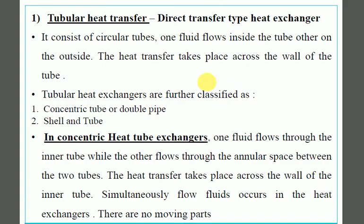Looking at the theory: it consists of a circular tube. One fluid flows inside the tube and the other is outside; heat transfer takes place across the wall of the tube. In a concentric tube heat exchanger, one fluid flows through the inner tube while the other flows in the annular space between the two tubes. Fluid flow occurs simultaneously and the parts are not moving.